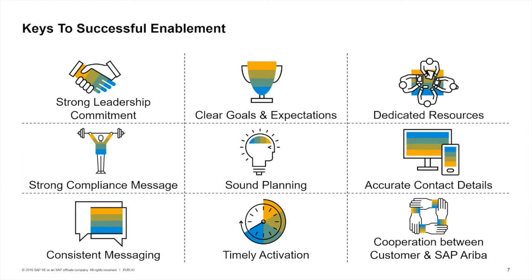Next is sound planning. It is important to have a well-thought-out plan that defines which suppliers will be targeted, how they will be targeted, and when. As you execute the plan, there will be multiple communication touchpoints with your organization's suppliers. In order for these touchpoints to be successful, you must have accurate contact information, which includes email addresses and phone numbers. Consistent messaging to your suppliers is also important, as they may reach out to various resources within your organization and the same consistent message needs to be delivered each time.